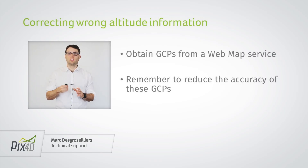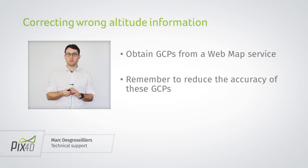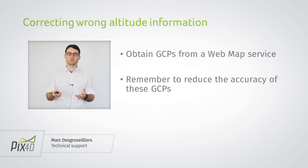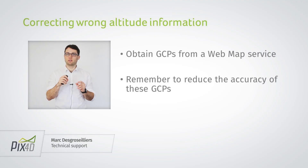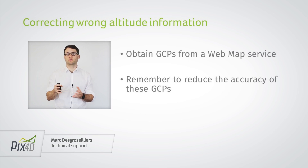What you can do is create GCPs in your project. If your project already had GCPs, great — you can just use those. If your project does not have GCPs, it's possible to obtain GCP information from a web map service such as Google Maps. In this case, it's important to remember that the default accuracy of the GCP in the software is set to 2 centimeters, and GCPs obtained from web services are typically less accurate. We recommend using an accuracy of the order of 3 to 5 meters, which would give much better results.